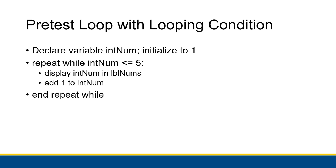Here's the pseudocode for the pretest loop with looping condition: we declare intNum, initialize to 1, then repeat while intNum is less than or equal to 5 — we display intNum in labelNums, add 1 to intNum — then End Repeat While, which signifies the end of the statement block and causes it to go back up and check the condition again. Because this is a looping condition, as soon as it's false we jump to End Repeat While and continue on.